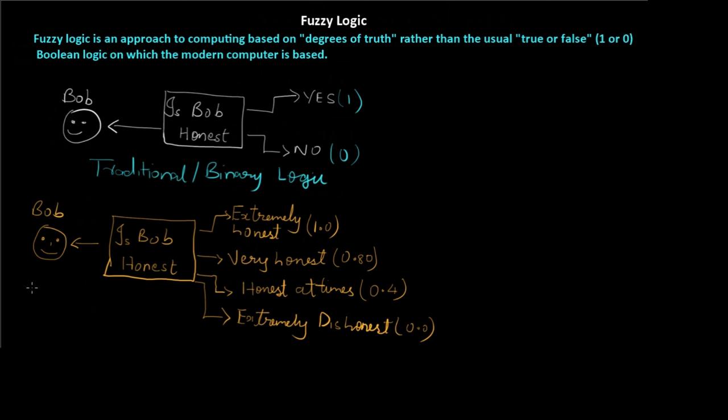Below that we have another diagram wherein we again have Bob with the same question, is Bob honest? But we have multiple answers depending upon how honest he is. We have extremely honest wherein the value is 1, very honest which is 0.8, honest at times which is 0.4, and extremely dishonest 0.0. In fuzzy logic this is called the degree of truth and it can range from 0 to 1 with multiple values. This is the basic difference between fuzzy logic and binary logic.